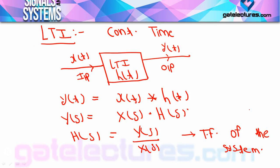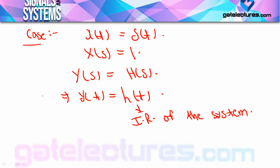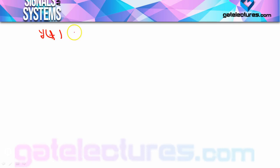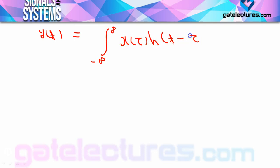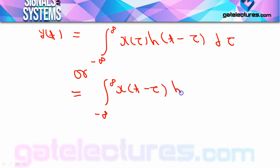This analysis we did is for continuous-time systems. Now, the convolution formula — Y(t) = X(t) convolved with H(t) — for a continuous-time system is: Y(t) = integral from minus infinity to plus infinity of X(τ)·H(t − τ) dτ. You can also write it as the integral from minus infinity to plus infinity of X(t − τ)·H(τ) dτ. Both formulas give the same answer.